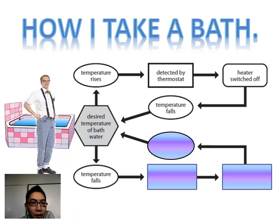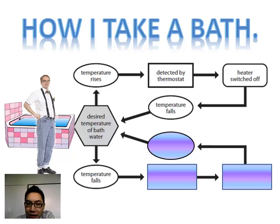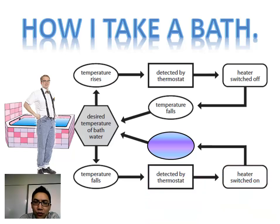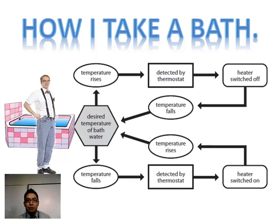If the temperature falls — say you fall asleep in the bathtub and the water temperature dips down to 36 — it's starting to get a little chilly because the heat from your body is dissipating into the water. The thermostat detects it and says, okay, let's bring it back to the desired temperature, and the heater is switched on or more hot water is produced, and the temperature rises. It's a pretty basic, simple idea, and that's exactly what homeostasis is.